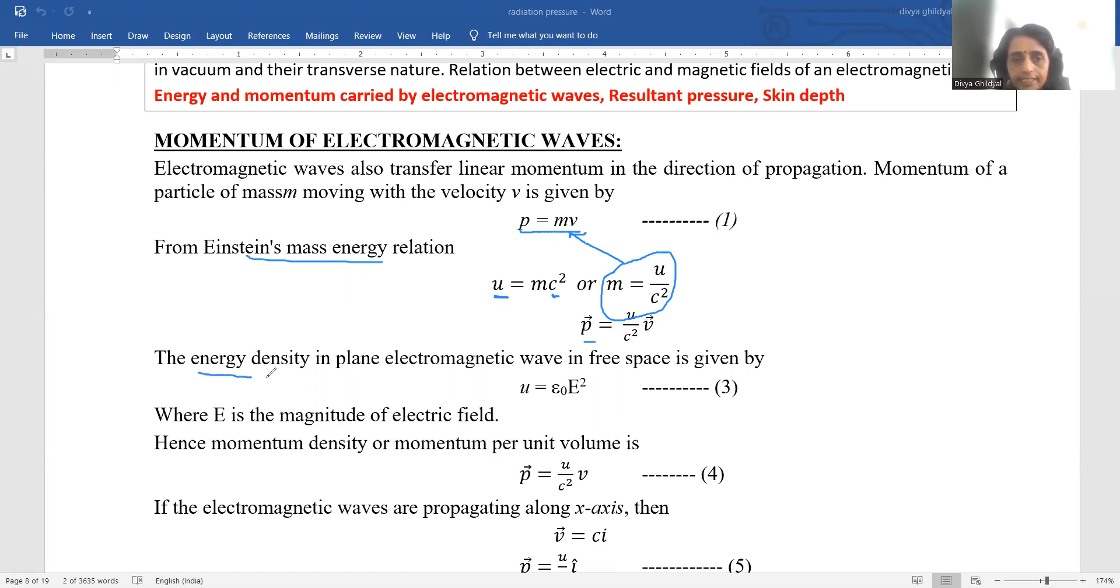Density, the energy density in plane electromagnetic wave in free space is given by u is equal to epsilon not e square. This is by definition, you do not need to derive it. E here is magnitude of electric field.